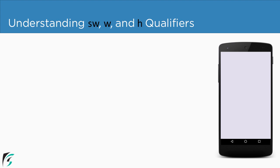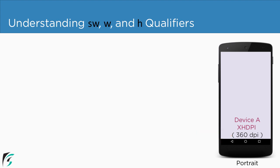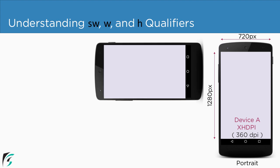Suppose this is my device with an XHDPI screen. We all know that the DPI value of an XHDPI device is 360 dots per inch, and the current resolution of my device is 720 x 1280 pixels. Similarly, in landscape mode as well, my device will have the same screen resolution of 720 x 1280 pixels.